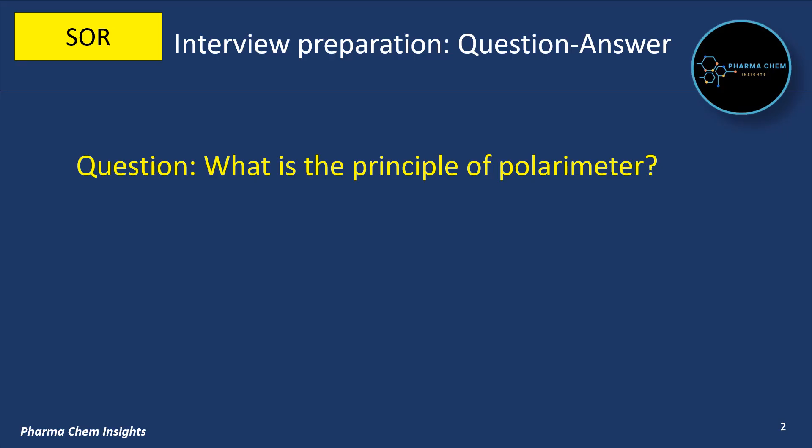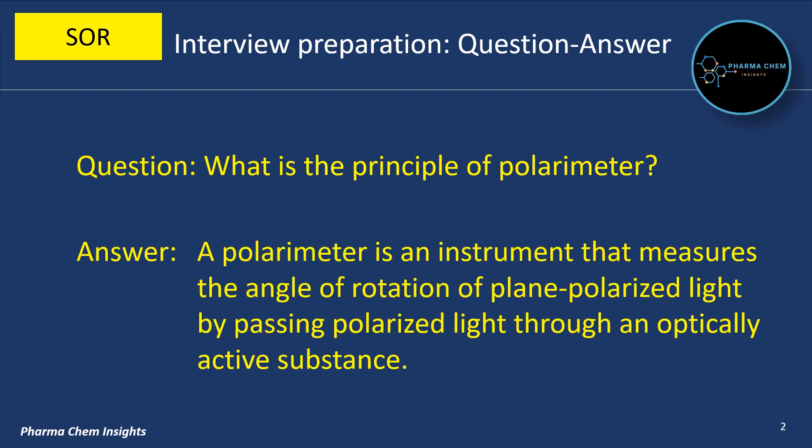First question: what is the principle of polarimeter? A polarimeter is an instrument that measures the angle of rotation of plane polarized light by passing polarized light through an optically active substance.